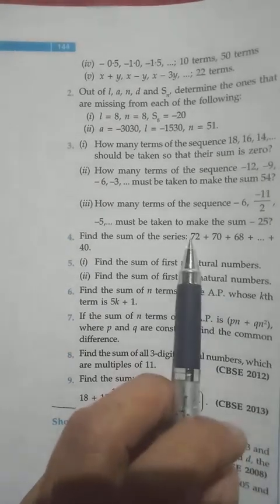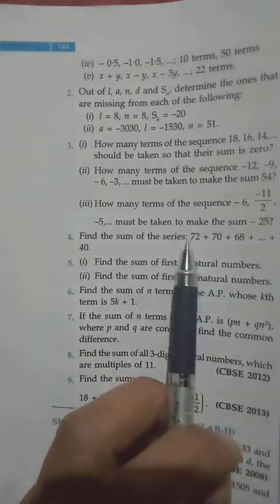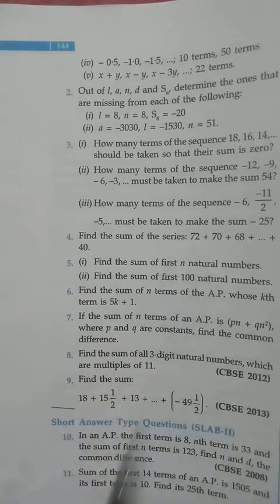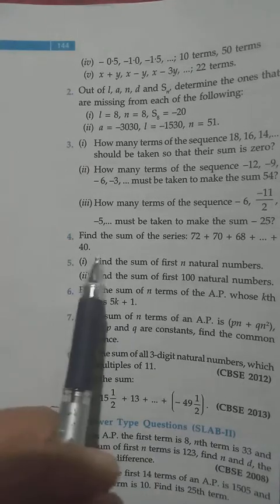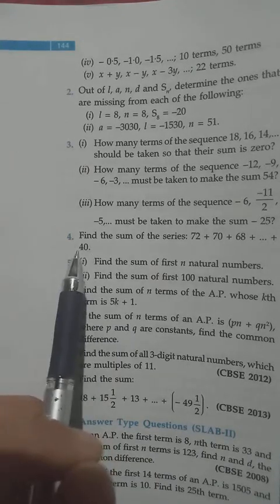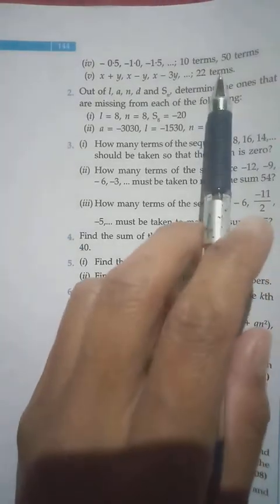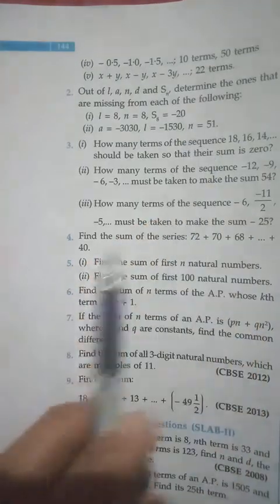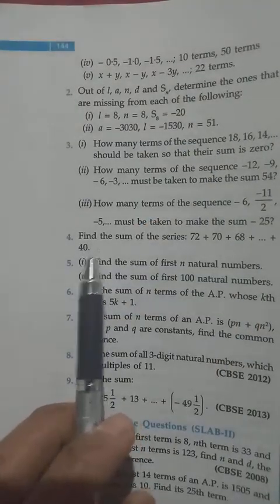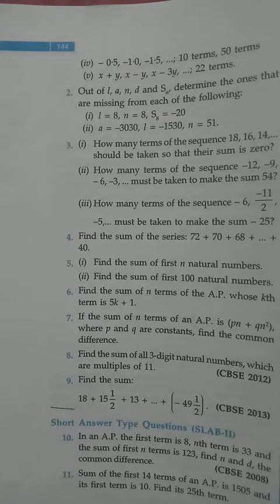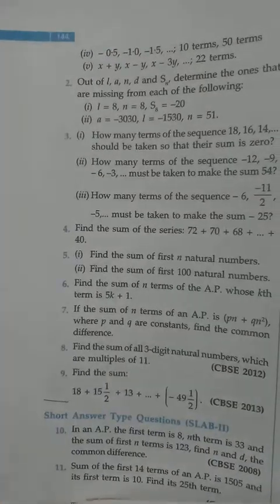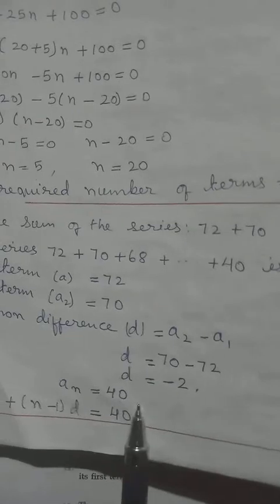The common difference is 70 minus 72, which is minus 2. We don't know N yet, so we still have to find it. They give us a term here with no term number, which means this one is the last term. We can take it as A_N or as L, so first we find N, taking A_N to be 40.